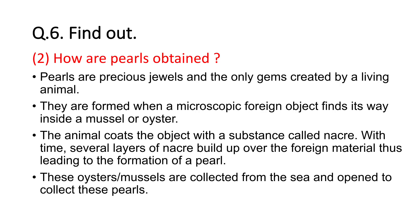Second: how are pearls obtained? Pearl is a precious jewelry obtained from living animals. They are found when a microscopic foreign object finds its way inside a mussel or oyster — an aquatic animal present in seas. The animal coats the object with a substance called nacre. With time, several layers of nacre build up over the foreign material, leading to the formation of the pearl. These oysters or mussels are collected from the sea and opened to collect the pearls.